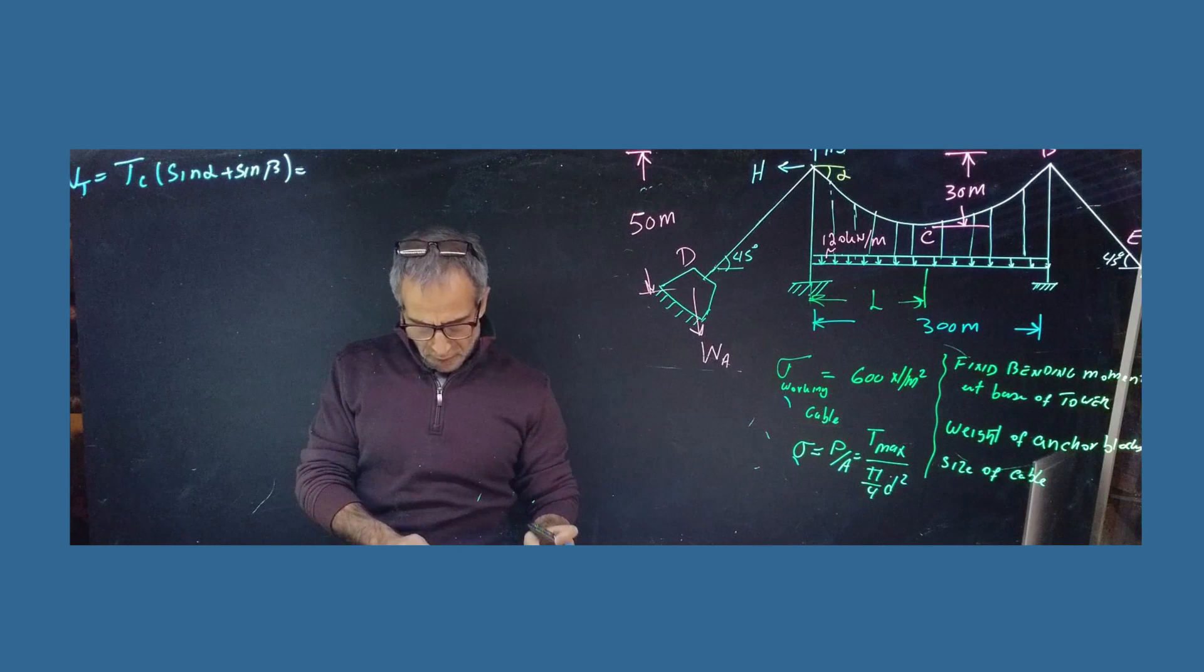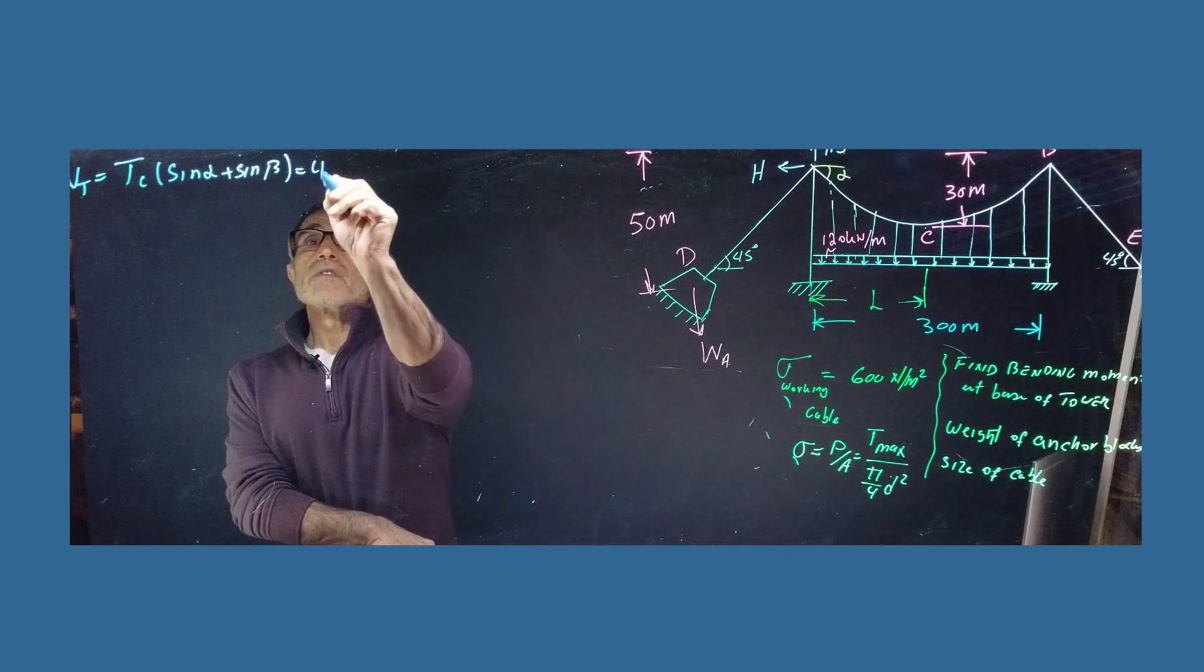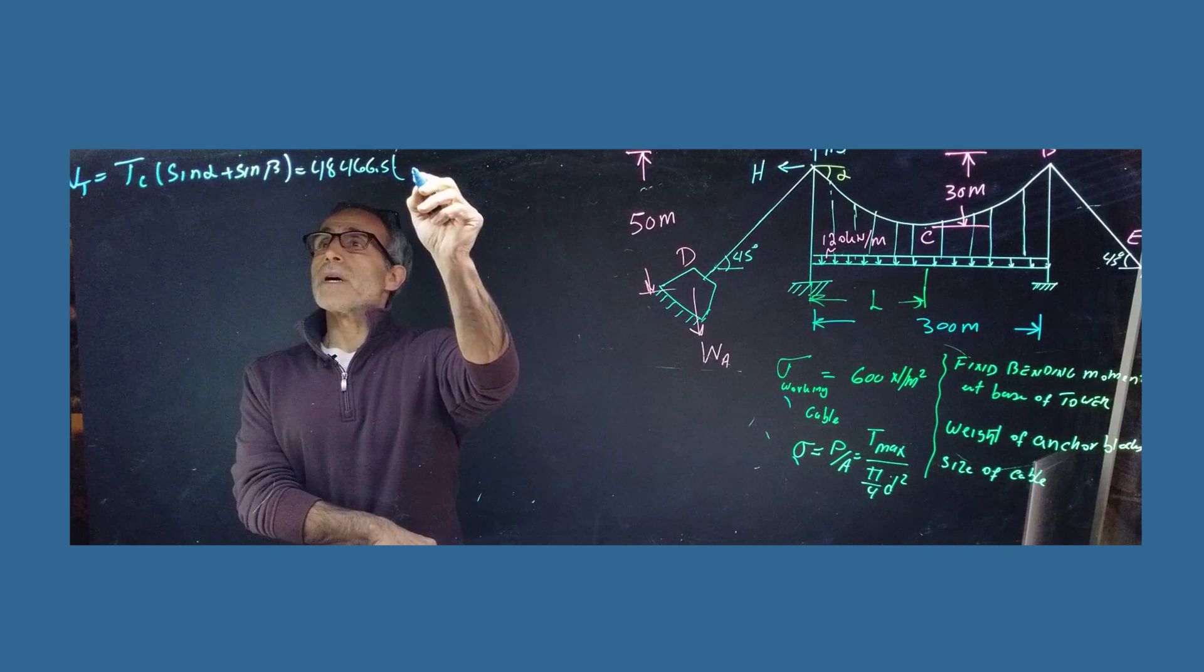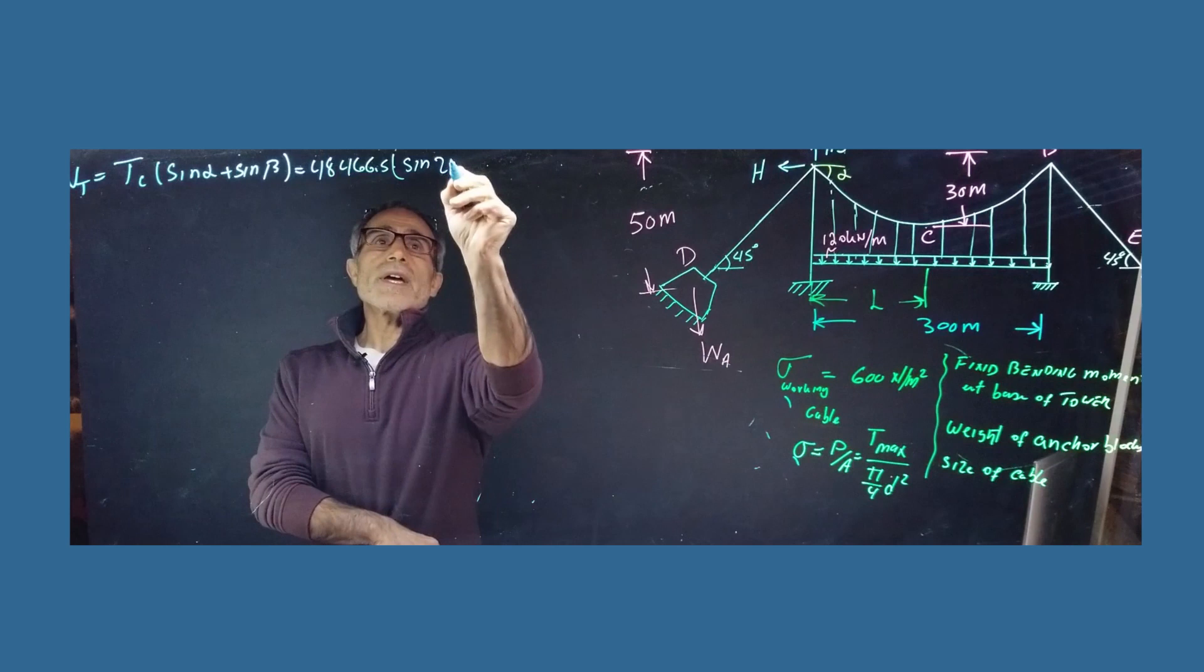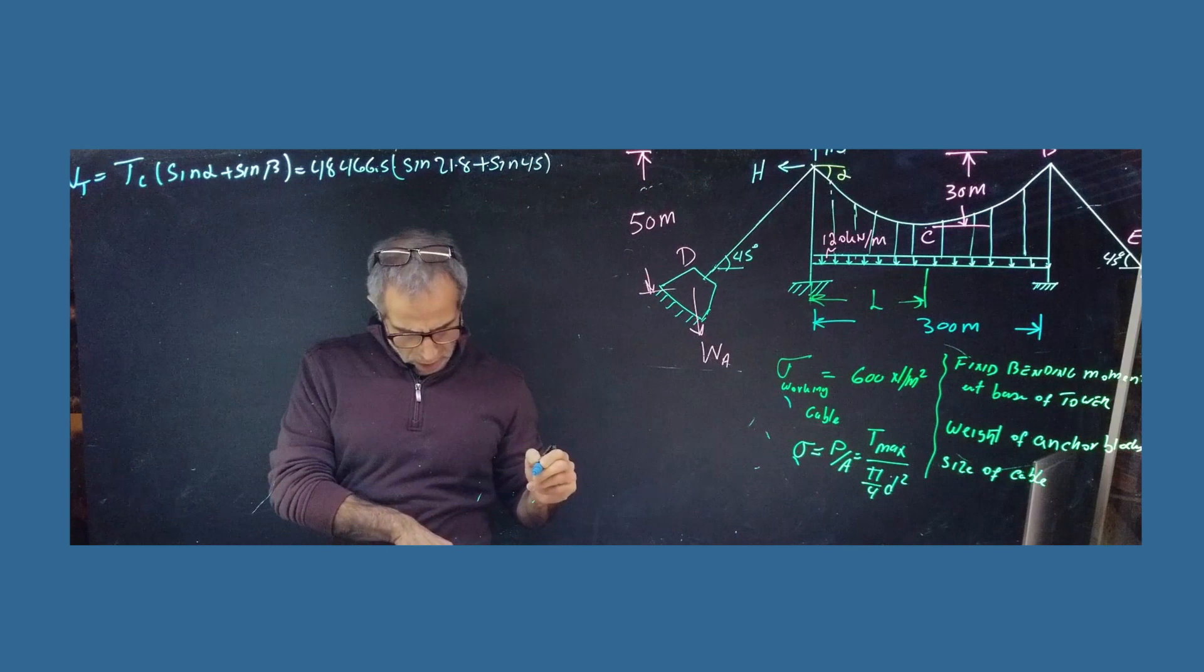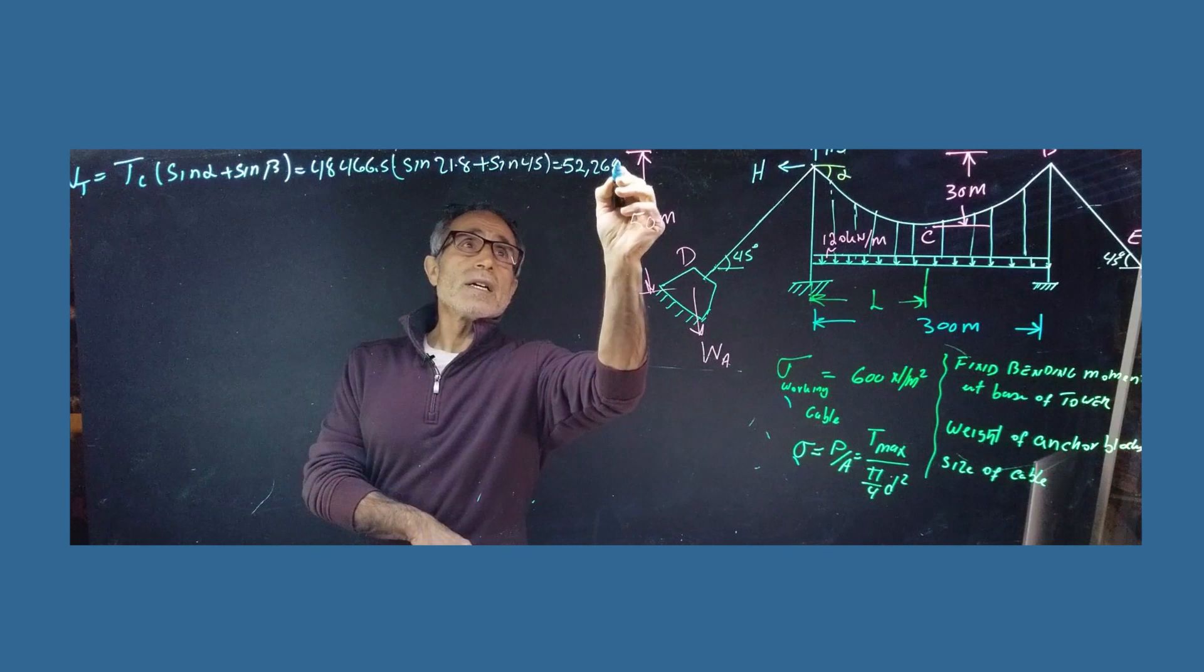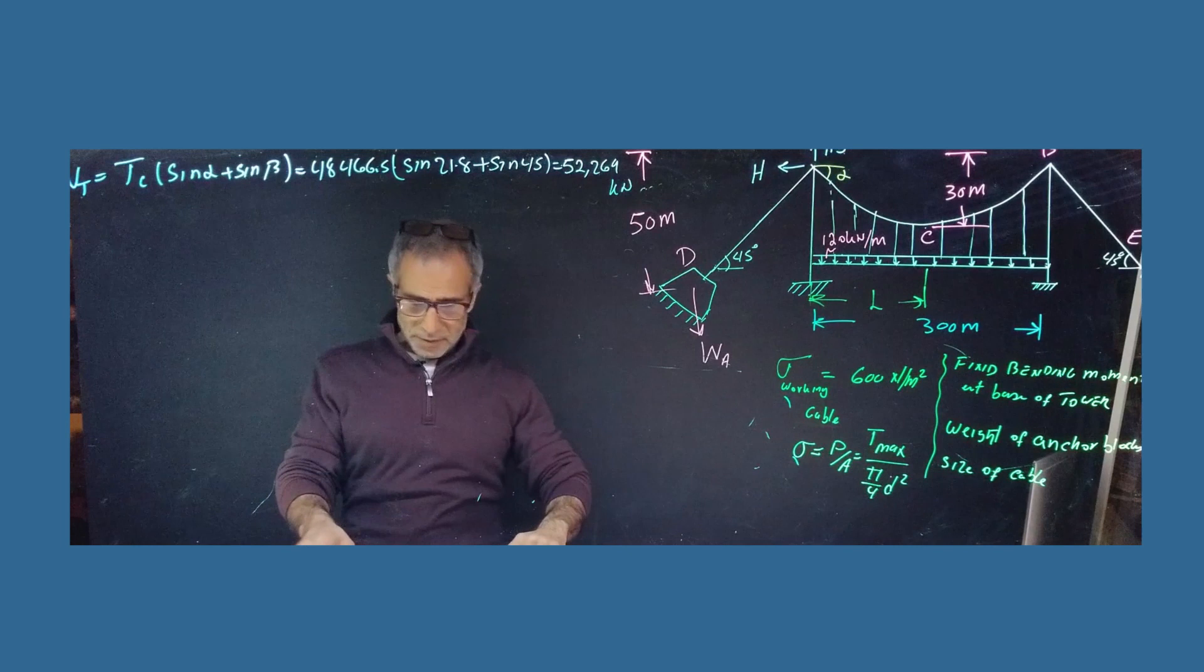there was TC sine of alpha plus sine of beta. And if you plug that in, it's going to come out to, So the TC came out to 48,4665.5 multiplied by sine of 21.8. And that's plus sine of 45. And that should come out to 52,269. 52,269 kilonewton.